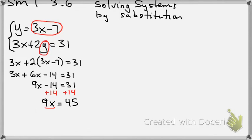Divide both sides by 9, trying to get x by itself. So x would equal 5.